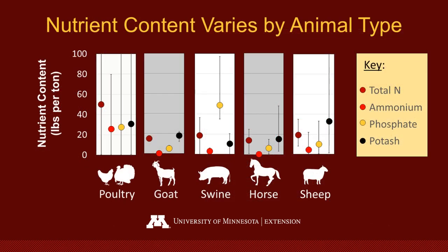This graphic shows how variable manure sampling results can be within and between species. This information was provided to us by several commercial manure testing labs in Minnesota, which gave us solid manure data from 2012 to 2017. Along the bottom of the graphic, you can see several different species groups, including poultry, goats, swine, horses, and sheep.